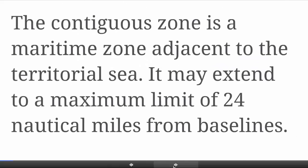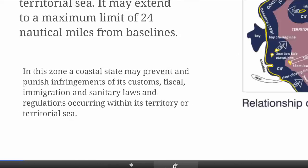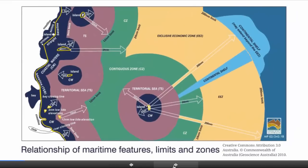The most obvious thing to note is that the contiguous zone is a maritime zone adjacent to the territorial sea, and it can extend to a maximum limit of 24 nautical miles from baselines. It's a zone of limited powers and functions — a zone where the coastal state may prevent and punish infringements of its customs, fiscal, immigration and sanitary laws and regulations occurring within its territory or territorial sea. This useful diagram prepared by Geoscience Australia gives us some indication of how the zones can interact.